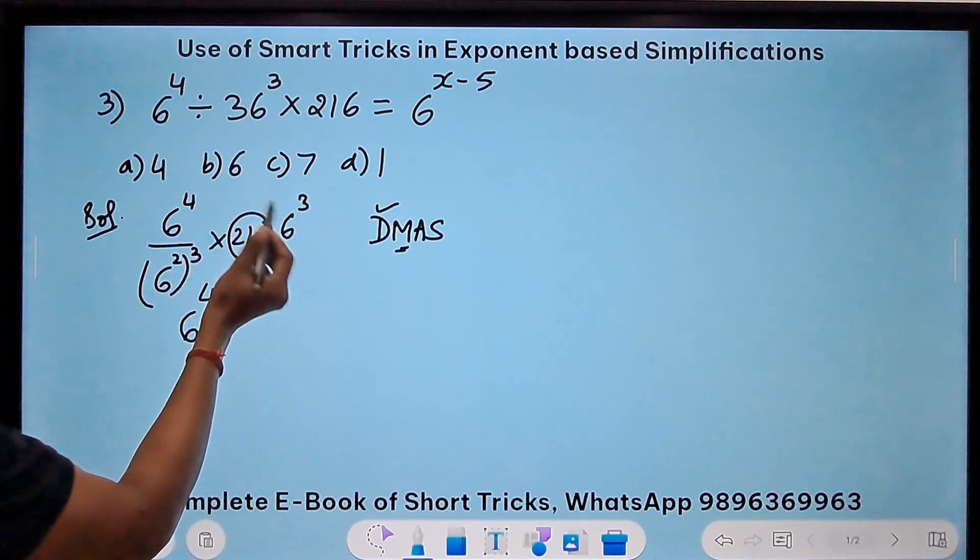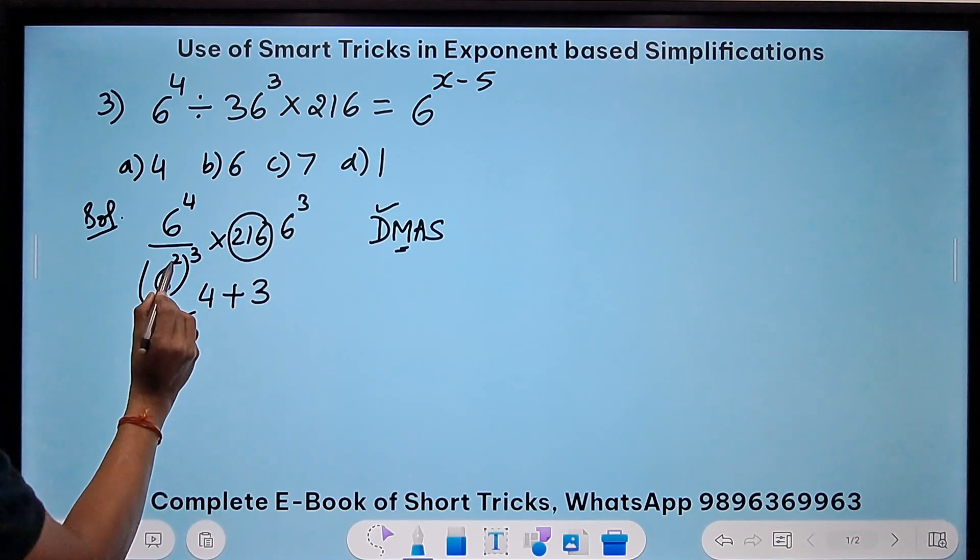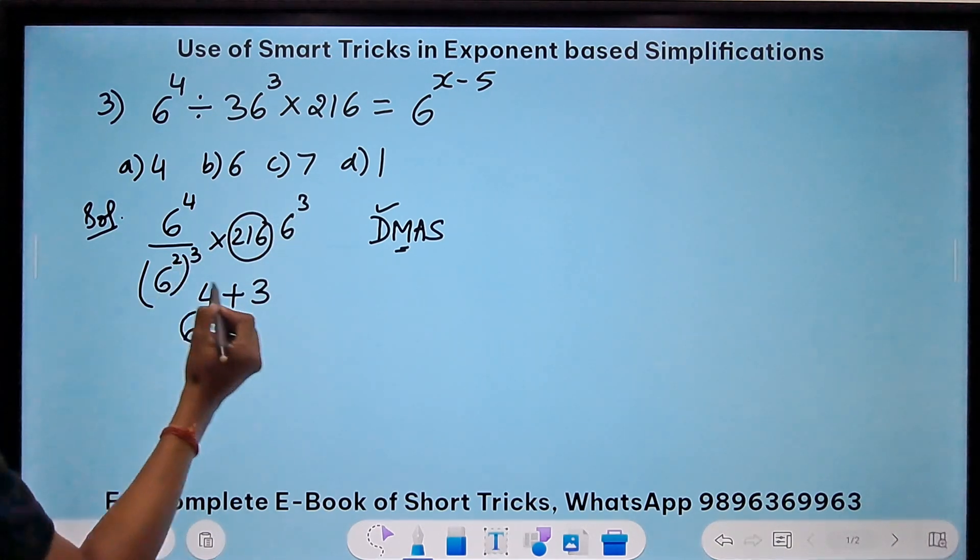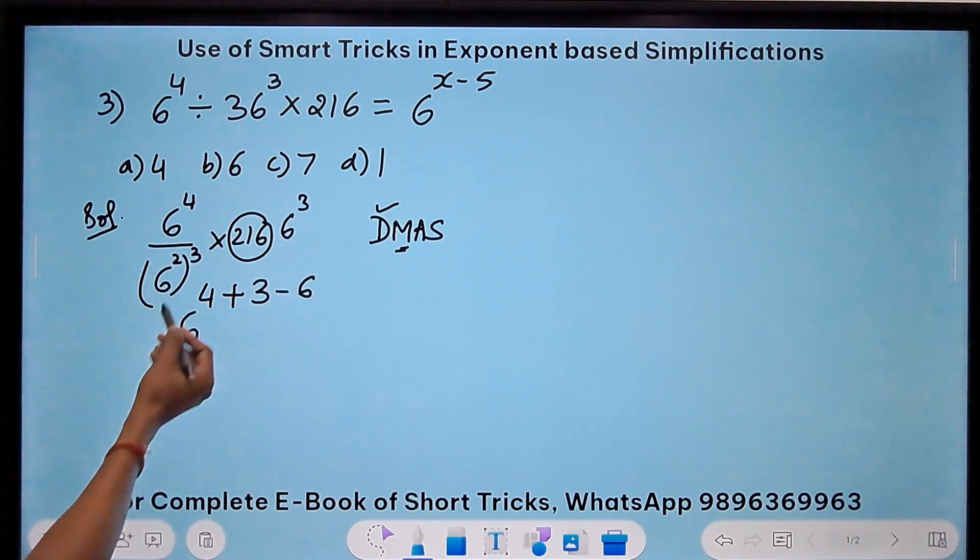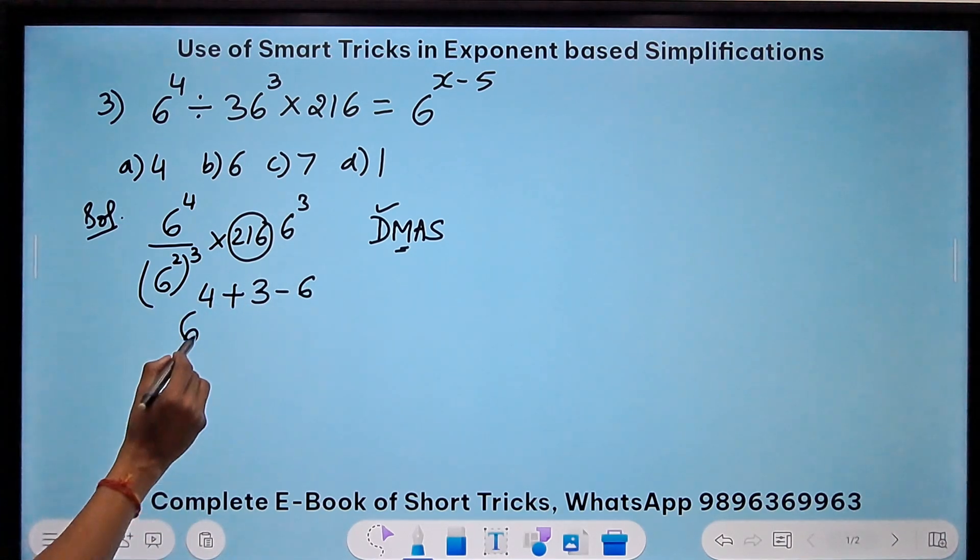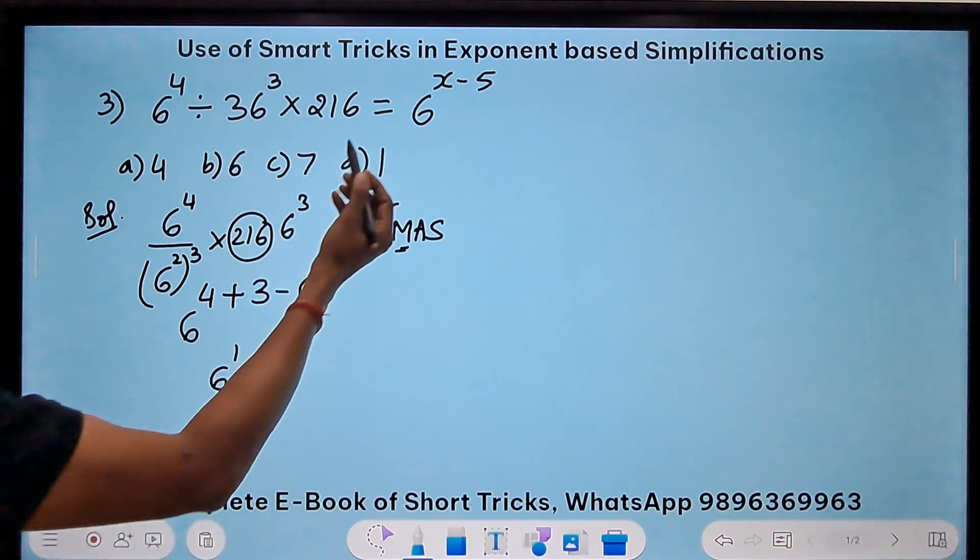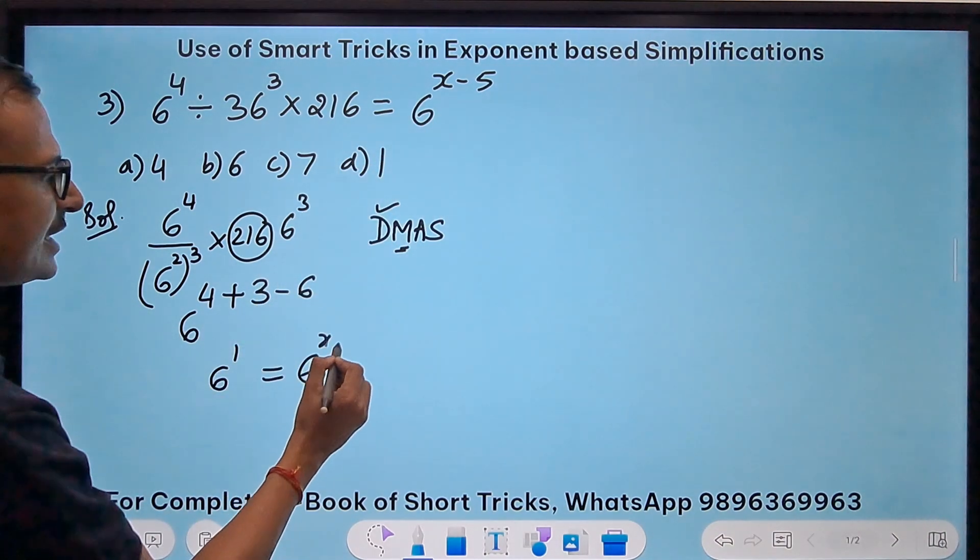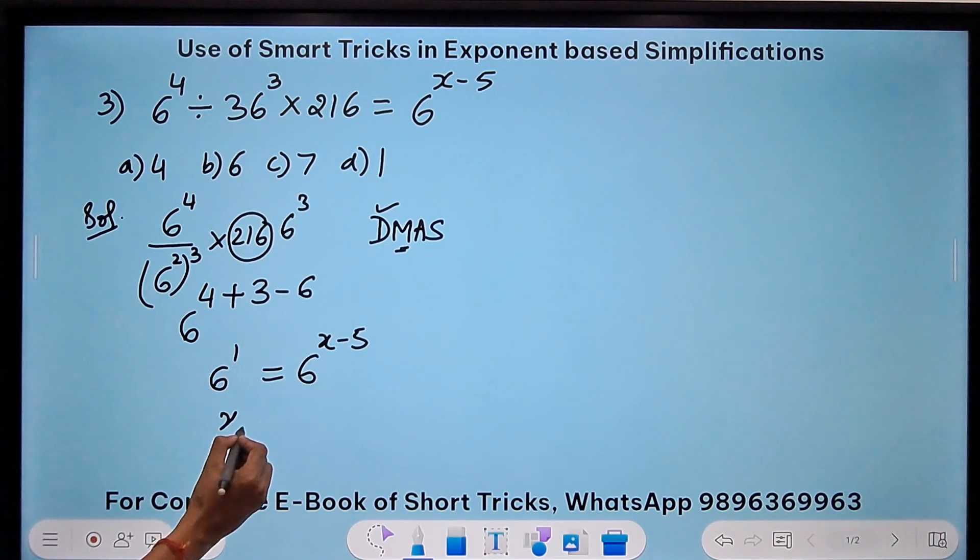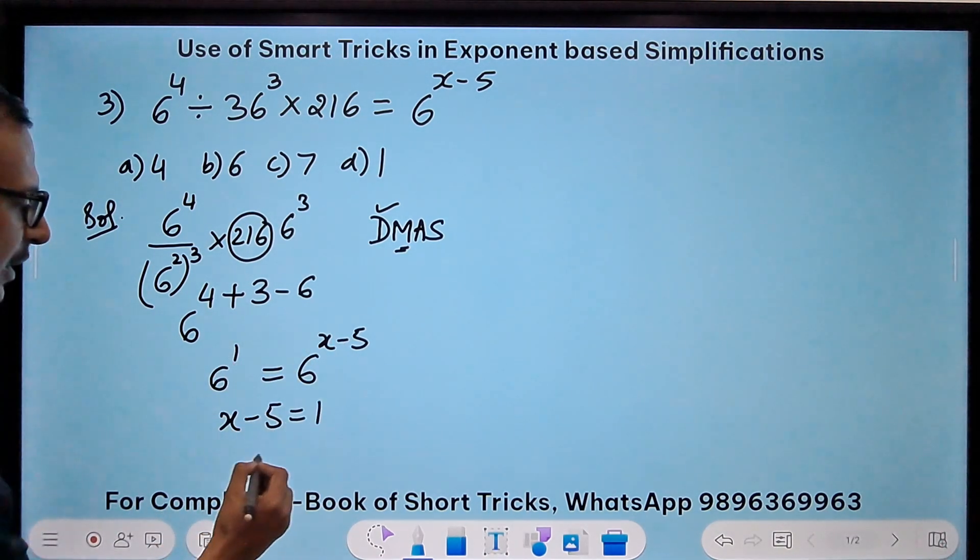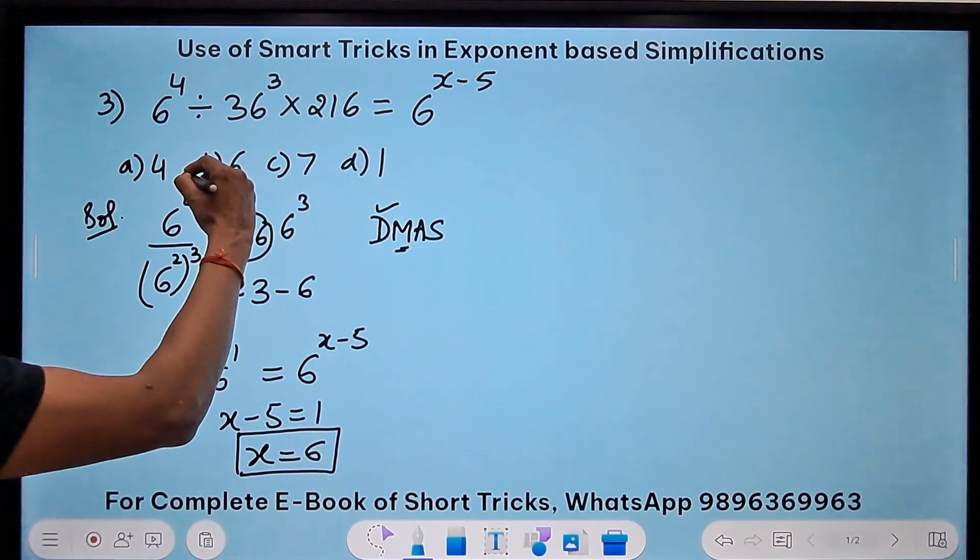So 6^4 here plus 3 here. Why? Because in the numerators you have the common base, so you add the exponents. In the denominator, you have two 3s are 6. So that 6 will get subtracted because the base is common, so you can apply the law of exponents. So how much is this? This is 6^1. And on the right hand side you have 6^(x-5). So when the bases are same, you can equate the exponents. So x-5=1 gives us x=6 as the answer for this particular question.